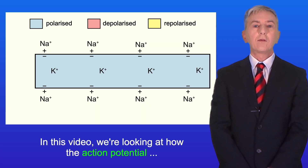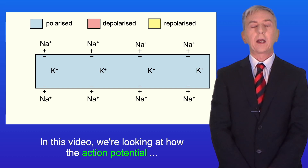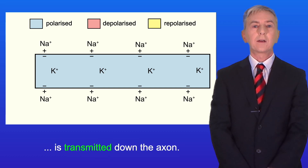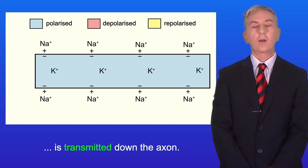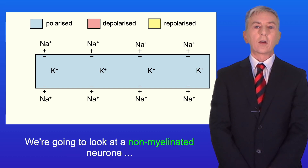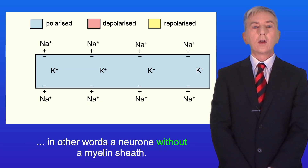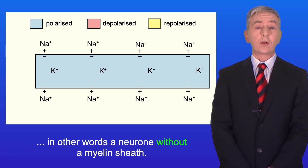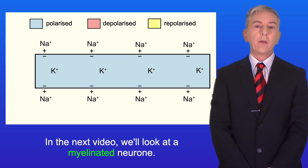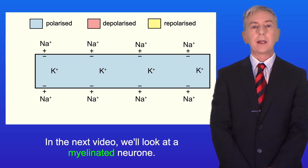In this video we're looking at how the action potential is transmitted down the axon. We're going to look at a non-myelinated neuron — in other words a neuron without a myelin sheath. In the next video we look at a myelinated neuron.